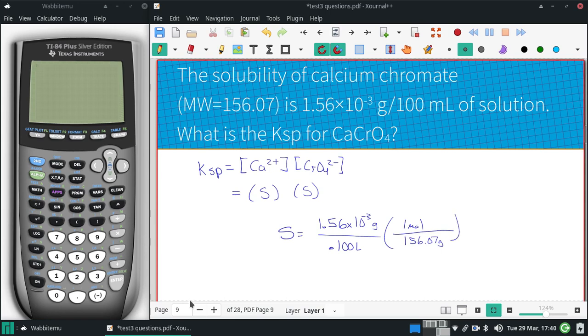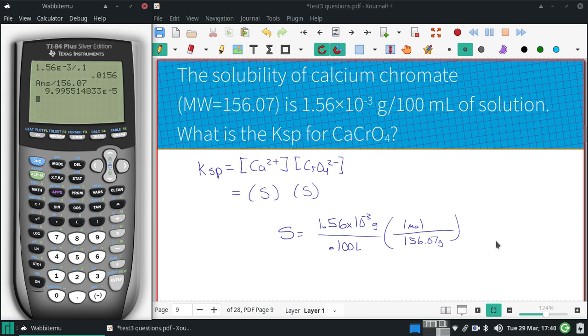So we have 1.56 times 10 to the negative third, divided by 0.1, and then again, divided by 156.07. We get a molar solubility of 9.9 times 10 to the negative fifth, and we just need to square that.